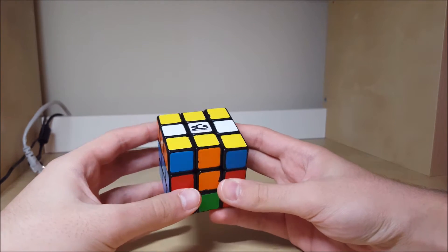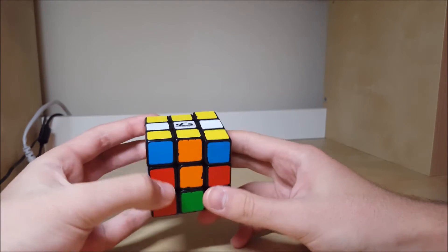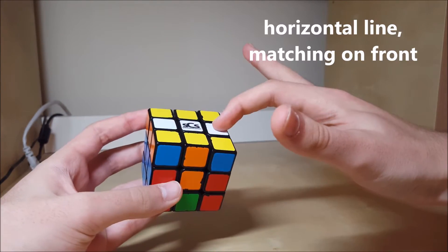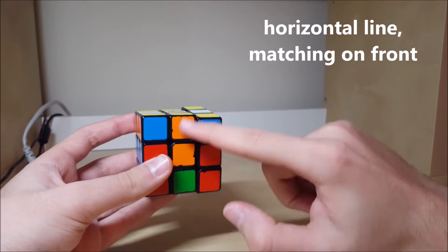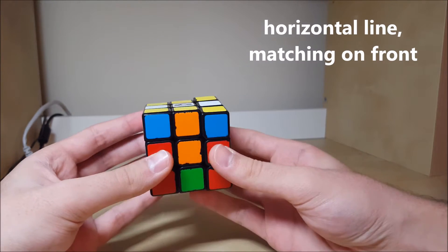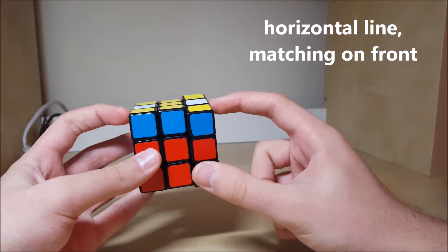To predict a columns case before you insert the left and right edges, you're going to see a horizontal line on top and then solid colors on the front. Then you'll do M2, and then you know you have a columns case, so you can go straight into solving it.